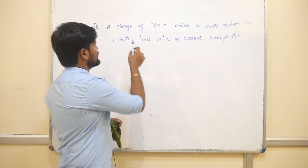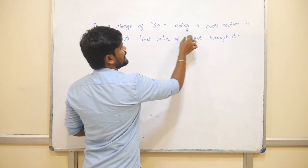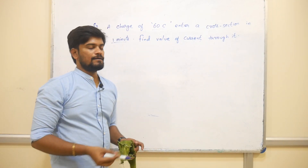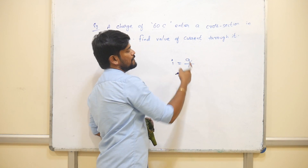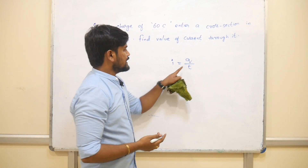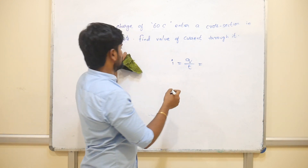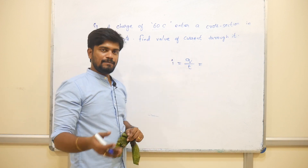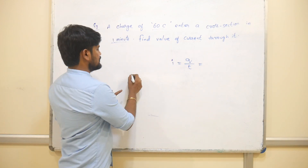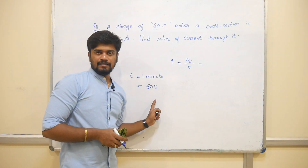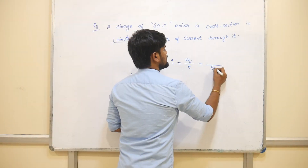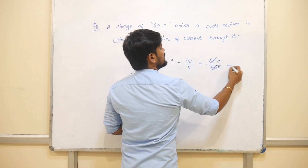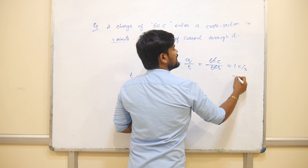Example: A charge of 60 coulombs enters a cross-section in one minute. Find the value of current through it. Current = Q/T. Time = 1 minute = 60 seconds. So current = 60 coulombs / 60 seconds = 1 Ampere.